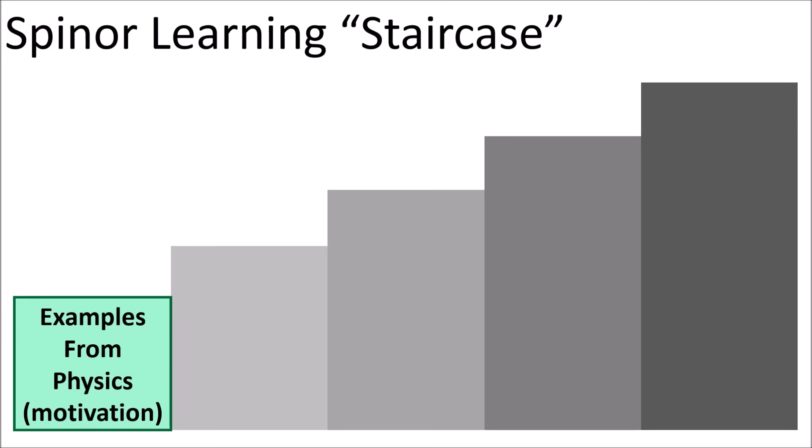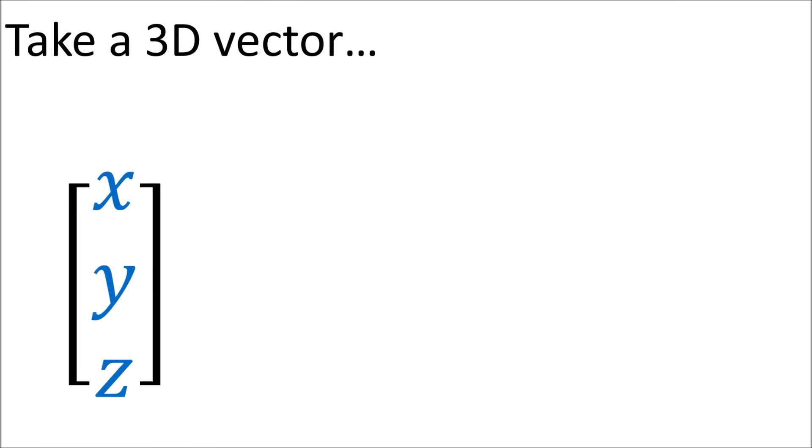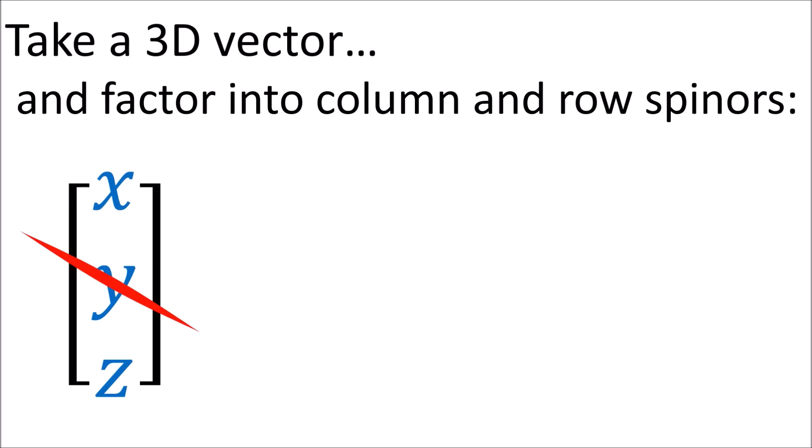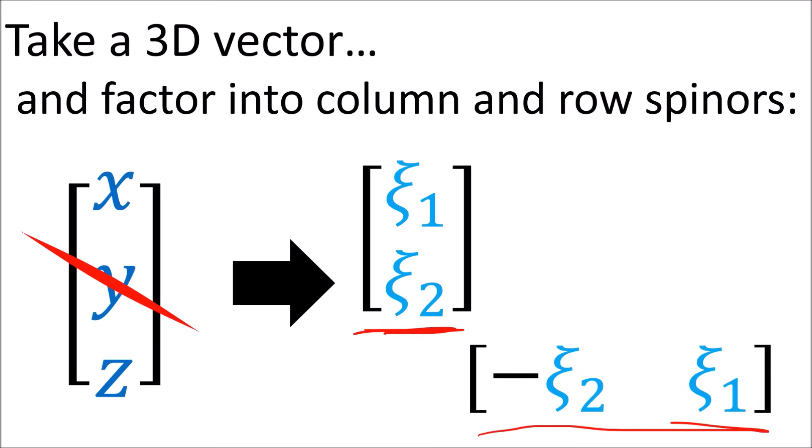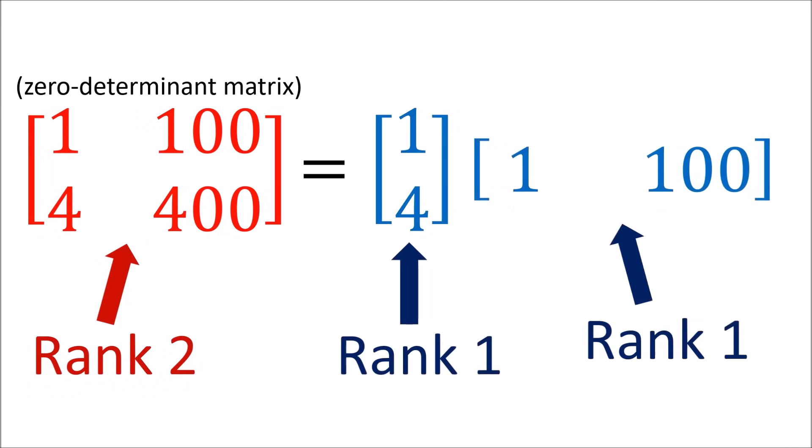Now that we have some motivation from physics, the next step is to discuss spinors from a purely mathematical point of view. Here we learn that spinors are like the square roots of vectors. This means that we can take a 3D vector and use a special trick to factor it into a column spinor and a row spinor. With a matrix, which is a rank 2 tensor, we can sometimes factor the matrix into a column vector and a row vector, which are both rank 1 tensors. So we can factor a rank 2 tensor into a pair of rank 1 tensors.